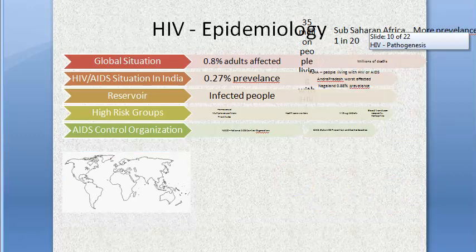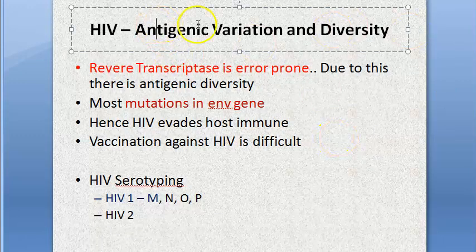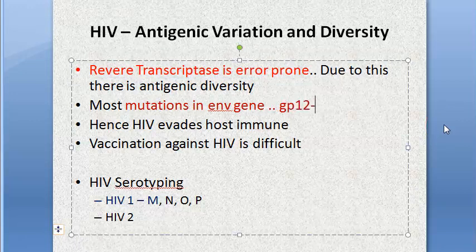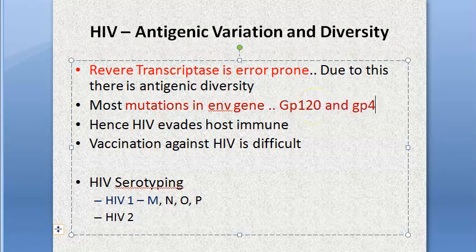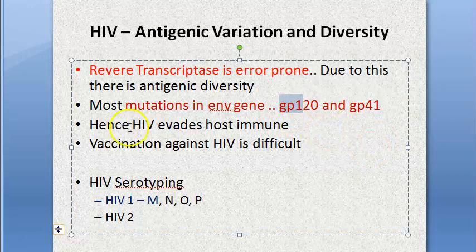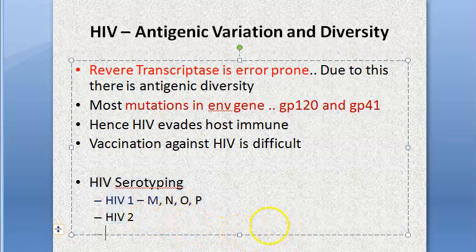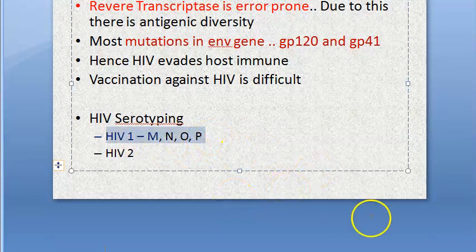Antigenic variation and diversity: reverse transcriptase is error-prone, so there is significant antigenic diversity. Most mutations occur in the envelope gene, which produces GP120 and GP41. Because these surface antigens vary so much, HIV evades the host immune response, which is why vaccination against HIV is very difficult. HIV has two serotypes: HIV-1 and HIV-2. Under HIV-1, the major group is M, along with groups N, O, and P.